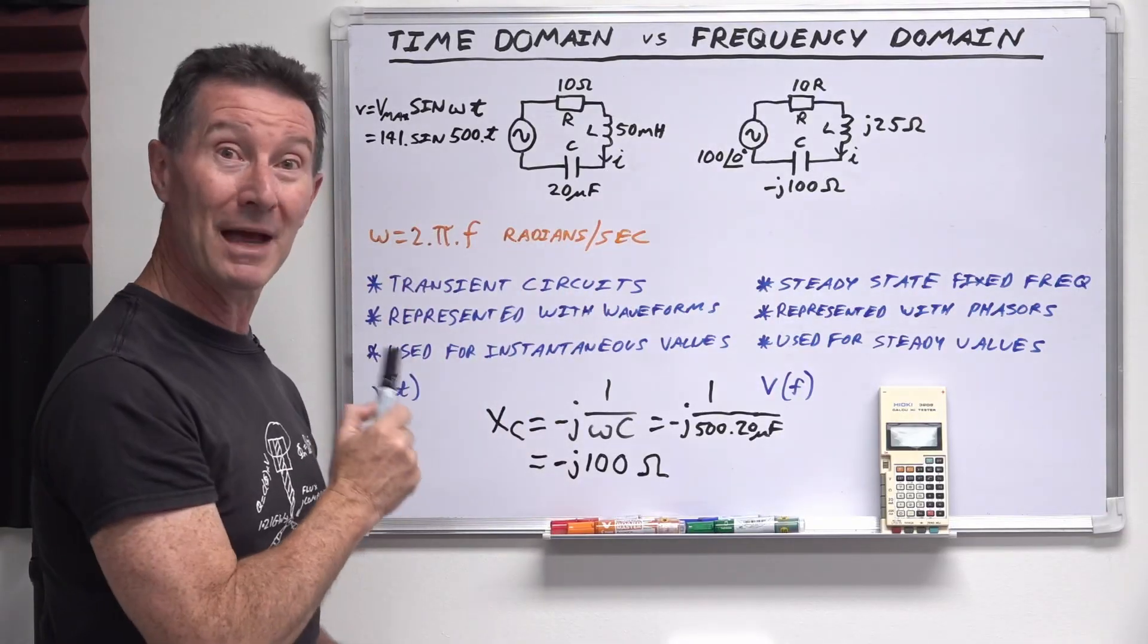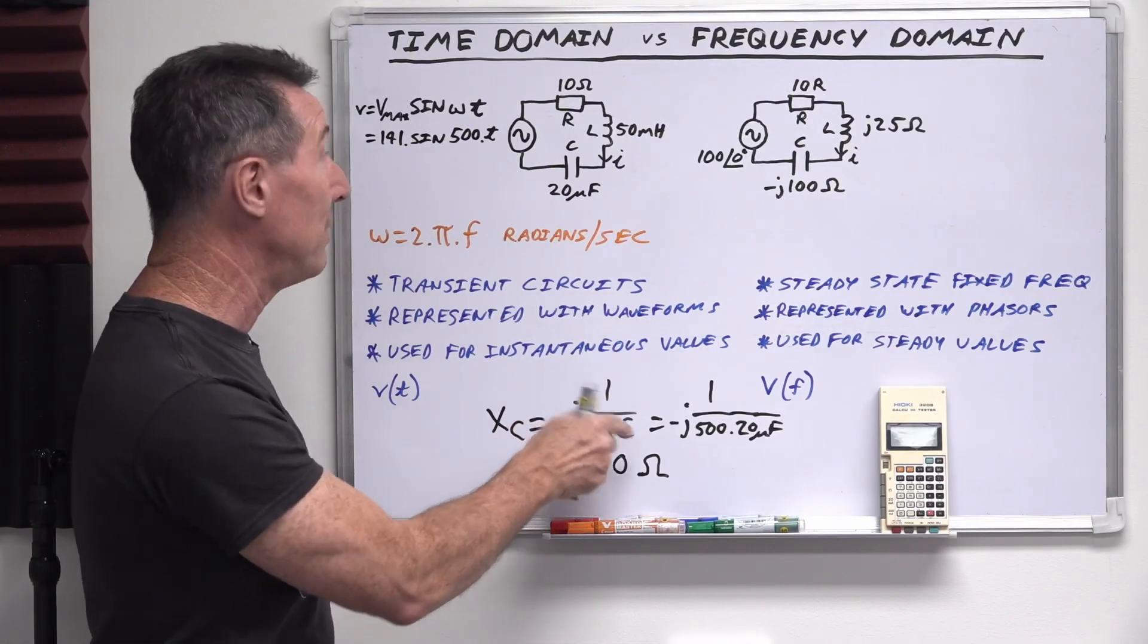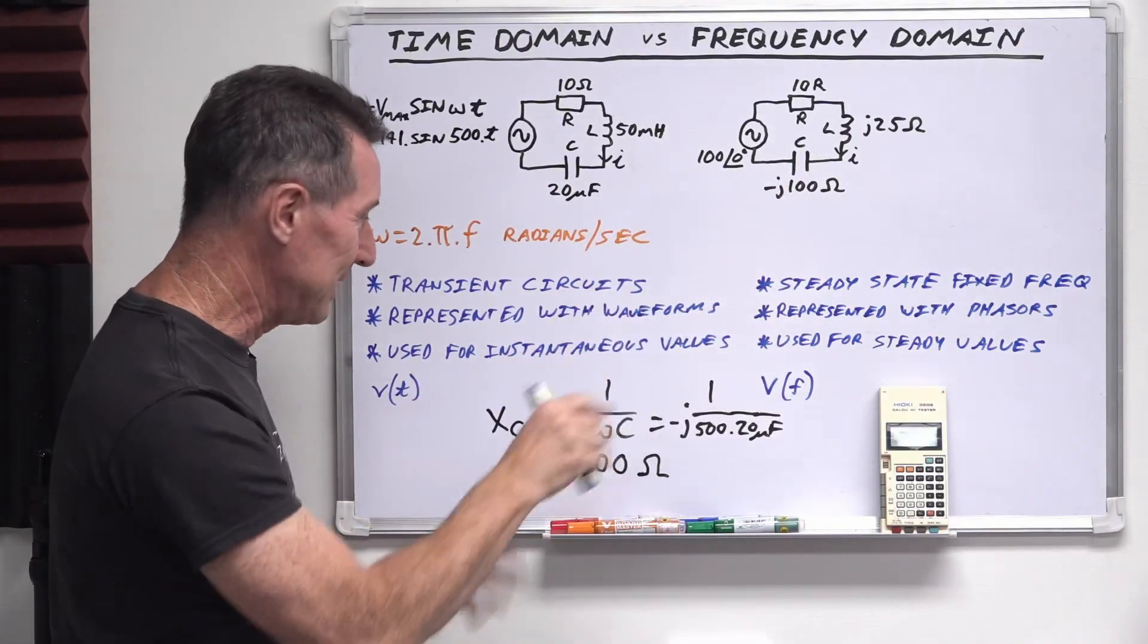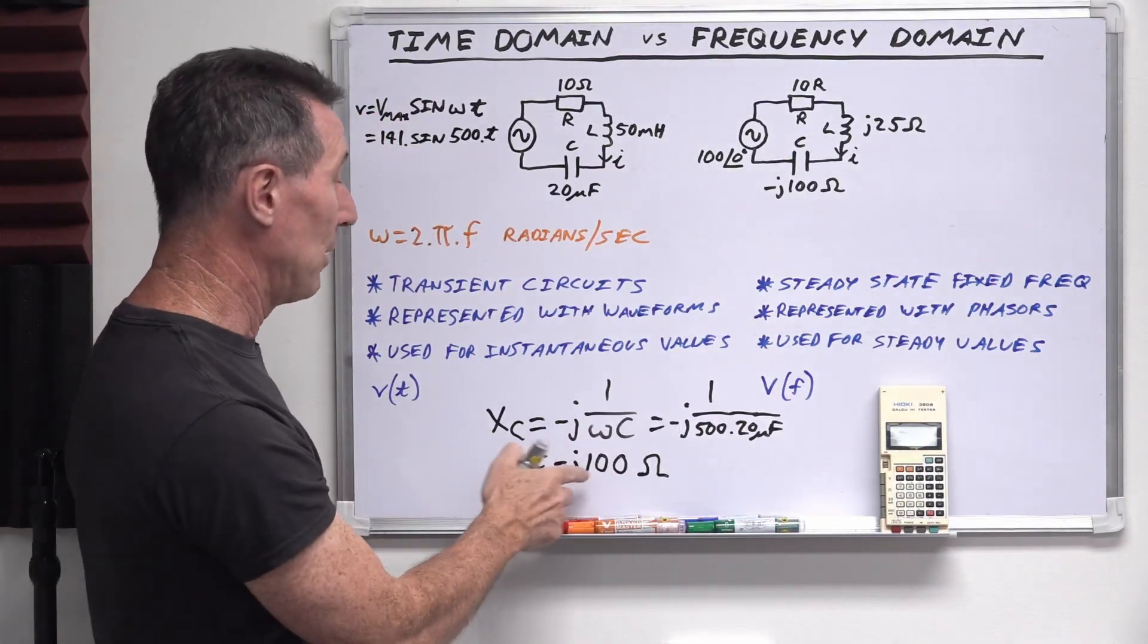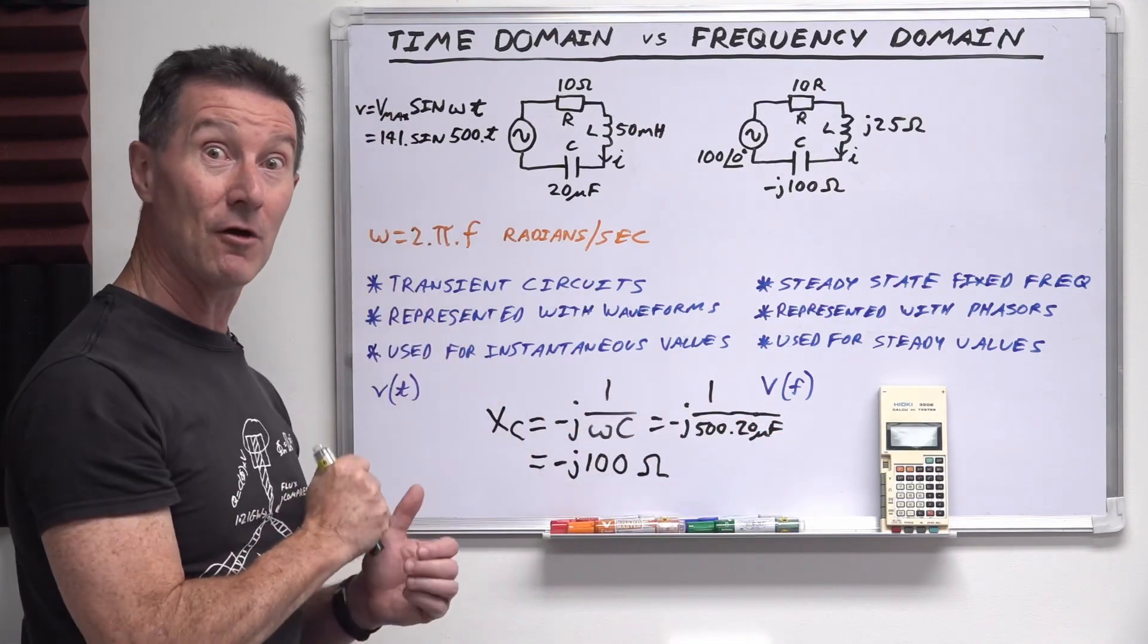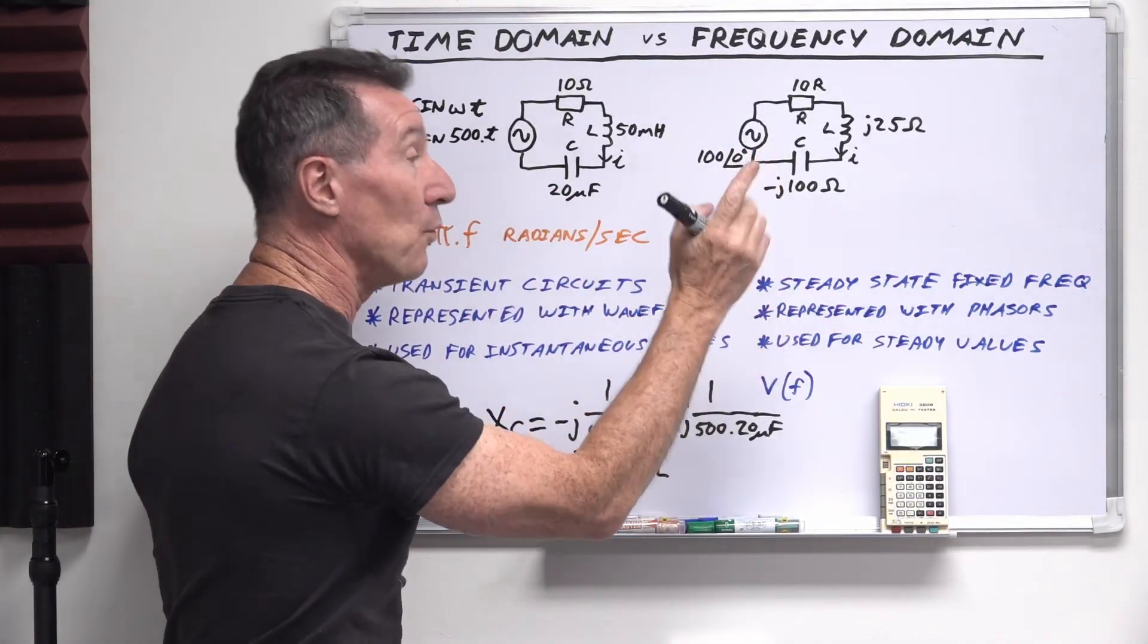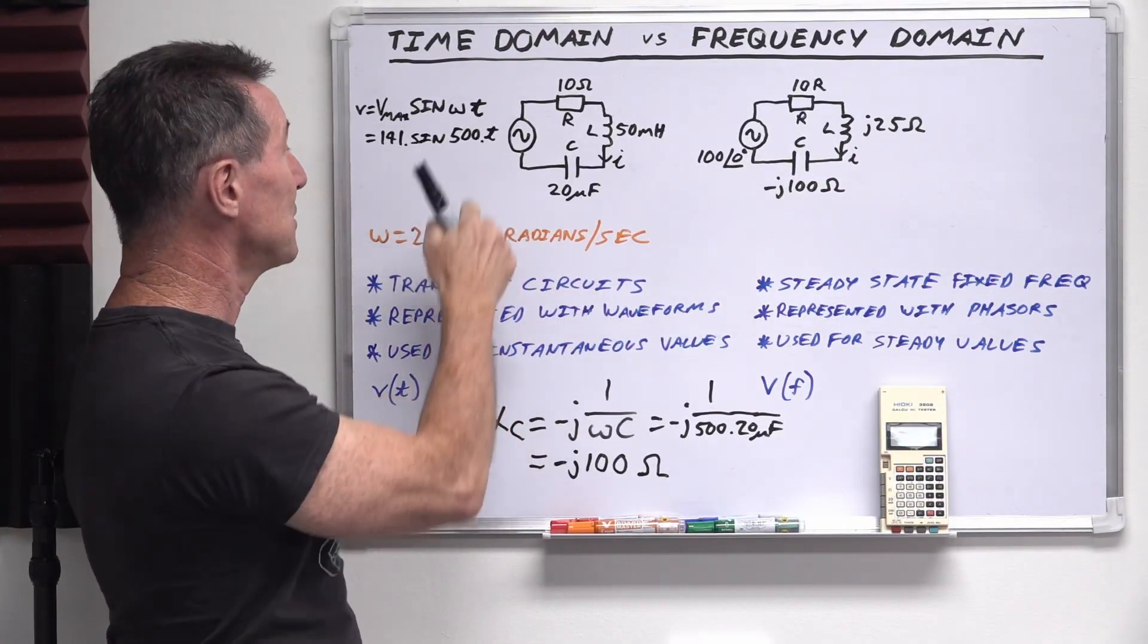But our 20 microfarad capacitor, remember our capacitive reactants formula here, is minus J1 on omega C. And omega, in this particular case, is 500 radians per second. I've just picked that value because it comes out to a nice value down here. Anyway, so that's minus J1 over 500 times 20 microfarads here, which gives us a value of minus J100 ohms. Just plug that into your confuser and do it yourself. So we write minus J100 ohms there.